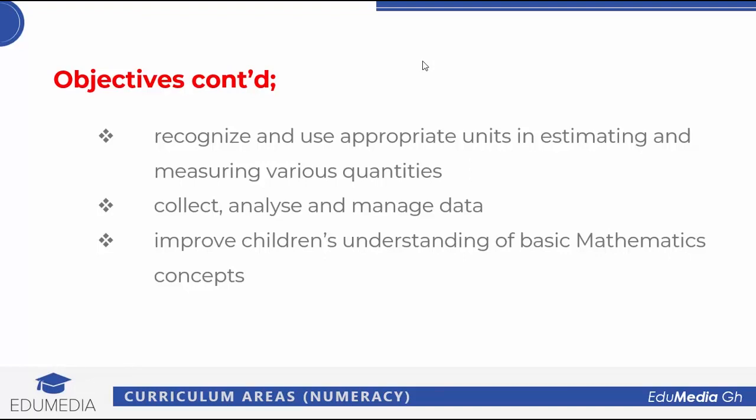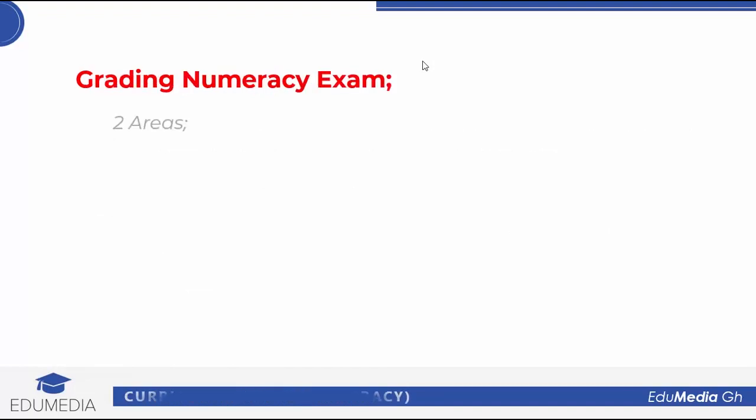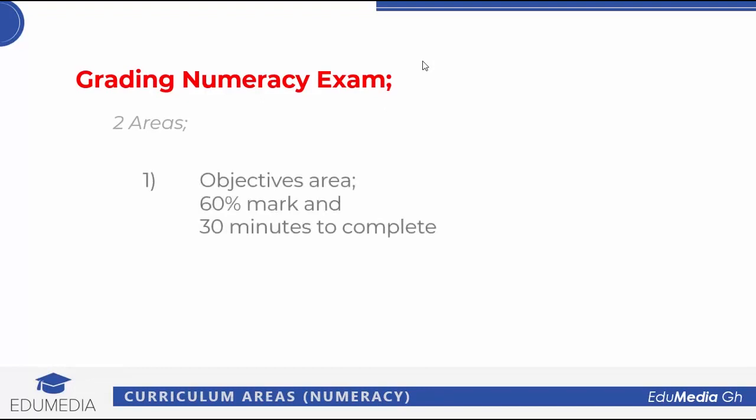A candidate is graded in two ways. First is the objective area, which consists of 60 marks, and normally the candidate is given 30 minutes to complete. The second part is the written computational area.